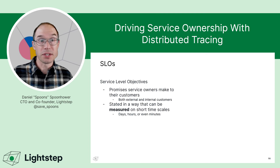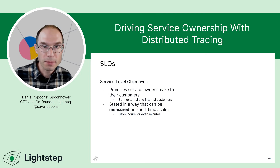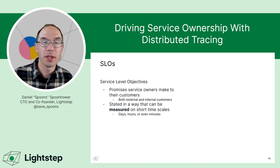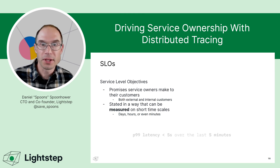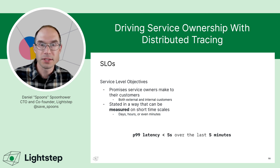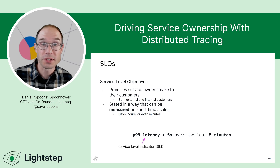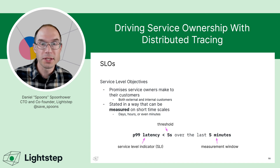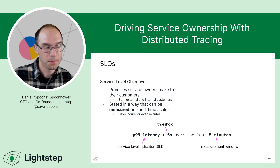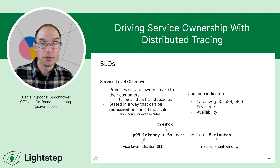Finally, let's talk about how we measure success in on-call through service level objectives. SLOs are promises that service owners make to their customers — internal or external — stated in a way that can be easily measured on short timescales like days, hours, or even minutes. For example, you might say p99 latency should be less than five seconds over the last five minutes. There are three important parts: the service level indicator — the thing you're measuring — a threshold for your goal, and explicitly stated measurement window. Without specifying the window, there are many ways to measure it and we may not be talking about the same thing.